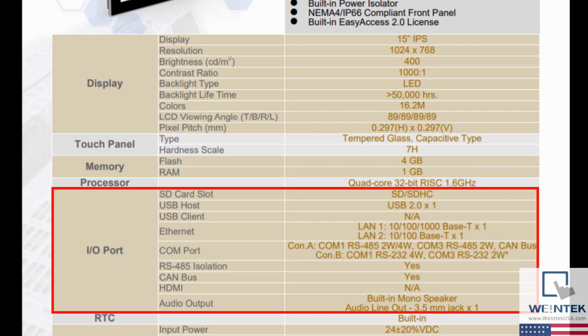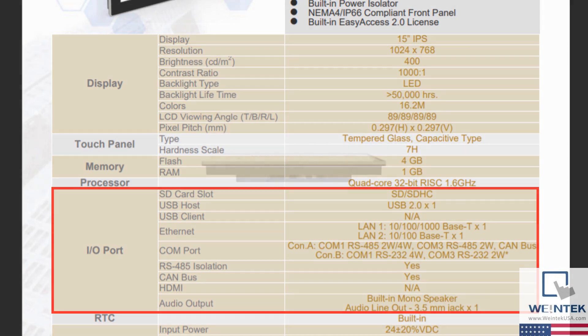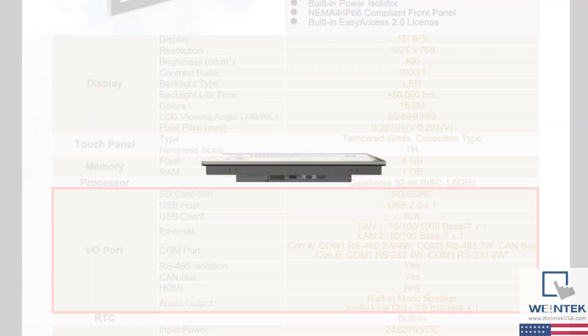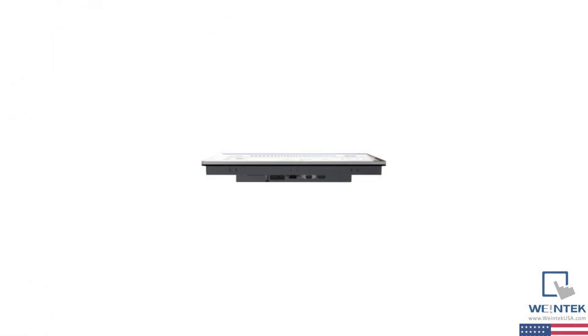Next, the IO or input/output port section will show all the possible input and output ports supported for the selected model. The SD card slot and USB ports are used for extra storage. This specific model comes with dual Ethernet ports which is helpful when trying to communicate with more than one device. Each Ethernet port has a specific purpose.